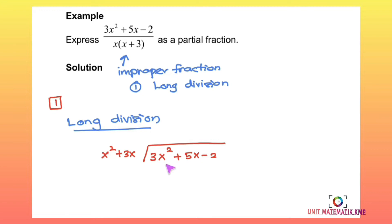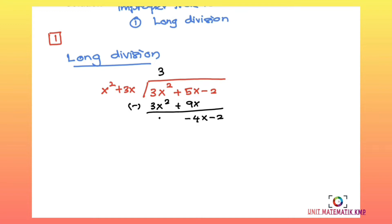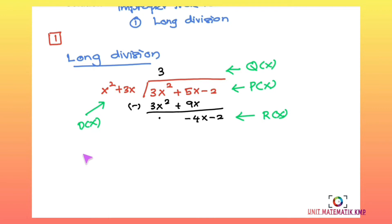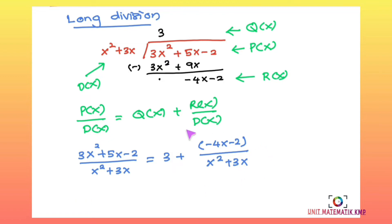We perform long division: 3x² + 5x − 2 divided by x² + 3x. After doing the long division, we write it in general form. We know this is p(x) and this is q(x). The general equation is: f(x) = Q(x) + r(x) over q(x). We substitute to obtain this expression.